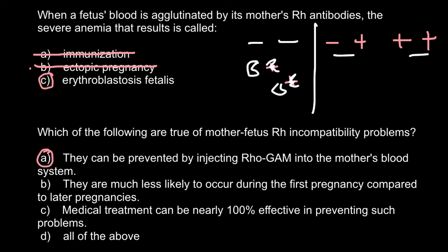Answer B: They are much less likely to occur during the first pregnancy compared to later pregnancies. As already explained, sensitization usually happens during the first pregnancy or after delivery, and the second pregnancy is usually in danger of being rejected by the mother's immune system — if the fetus is RH-positive. So this is also a correct answer.